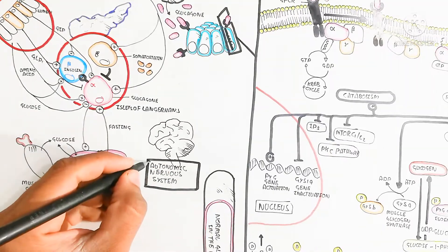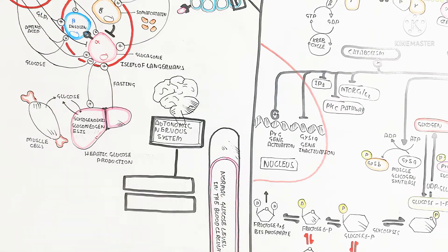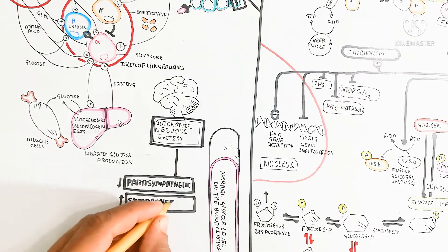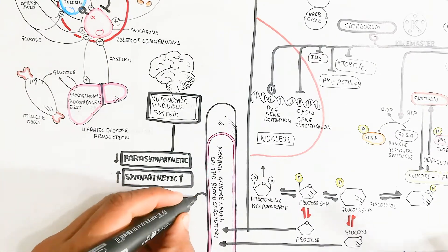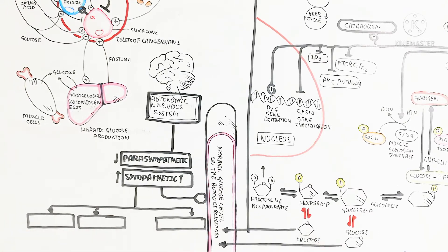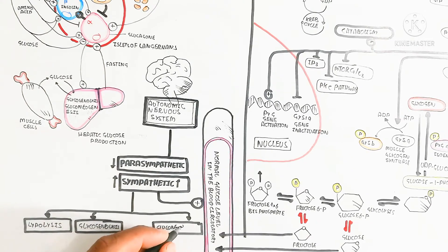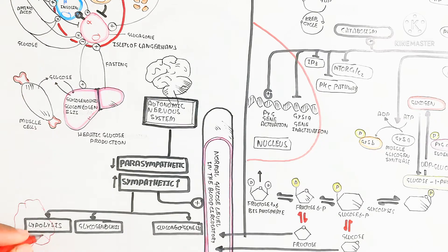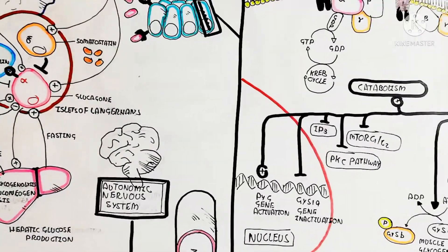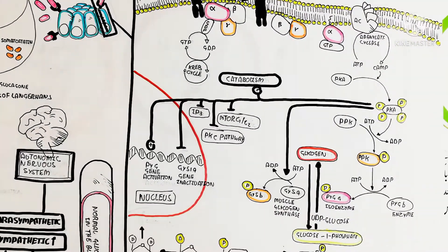The autonomic nervous system plays an important role: the parasympathetic nervous system is inactivated while the sympathetic nervous system is activated. Sympathetic activation triggers glycogenolysis through glucagon production via vagal nerves. On the other hand, lipolysis, glycogenolysis, and gluconeogenesis will occur. During the fight-or-flight response, blood sugar is elevated above normal levels. The fasting state promotes the sympathetic nervous system to drive glycogenolysis and lipolysis.